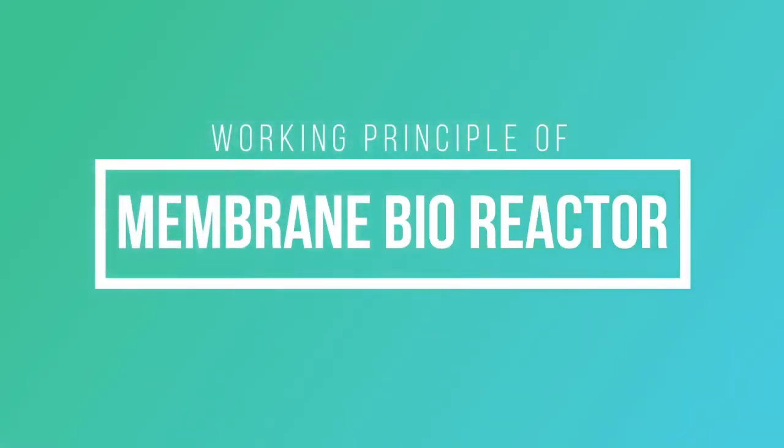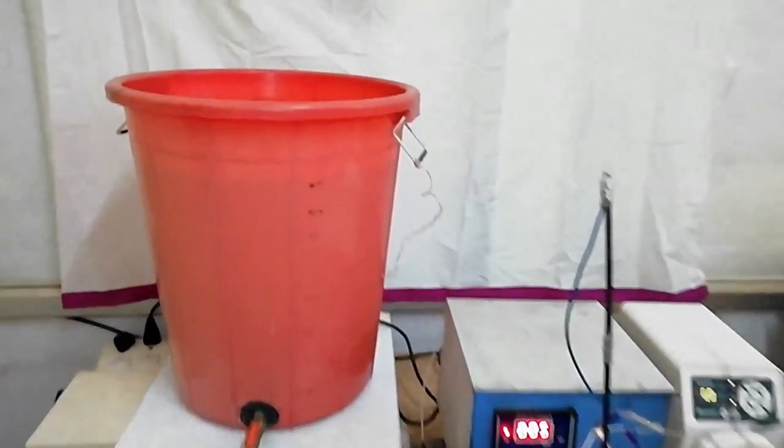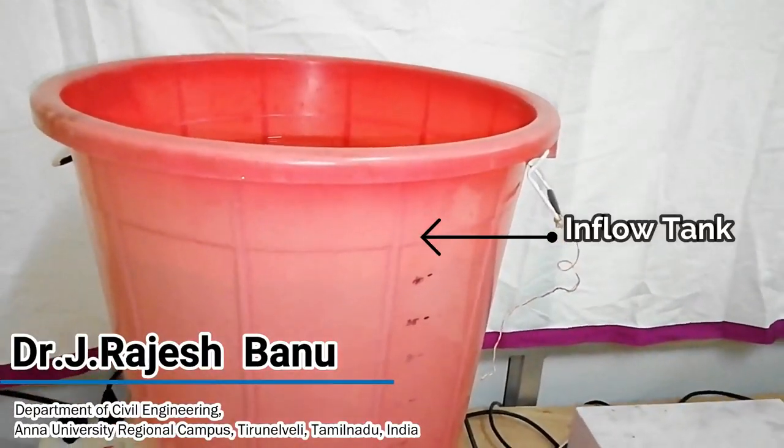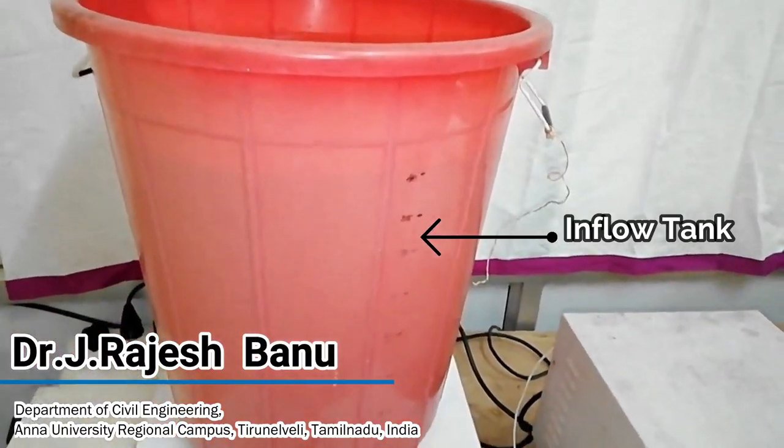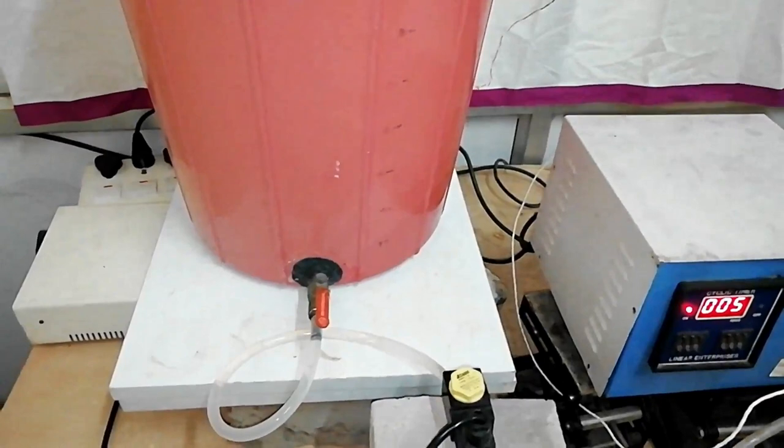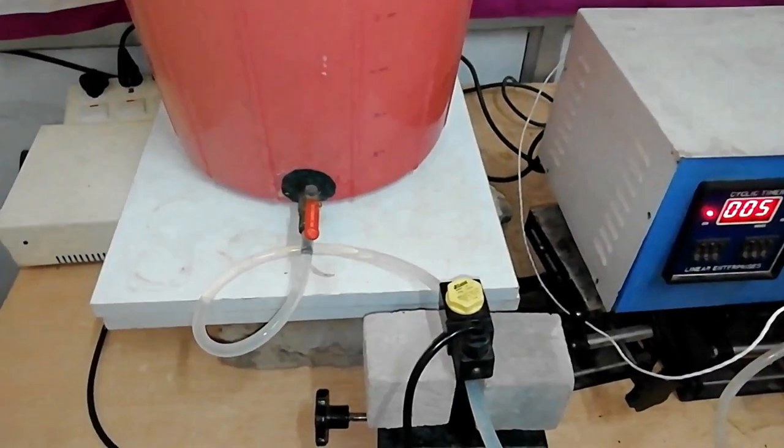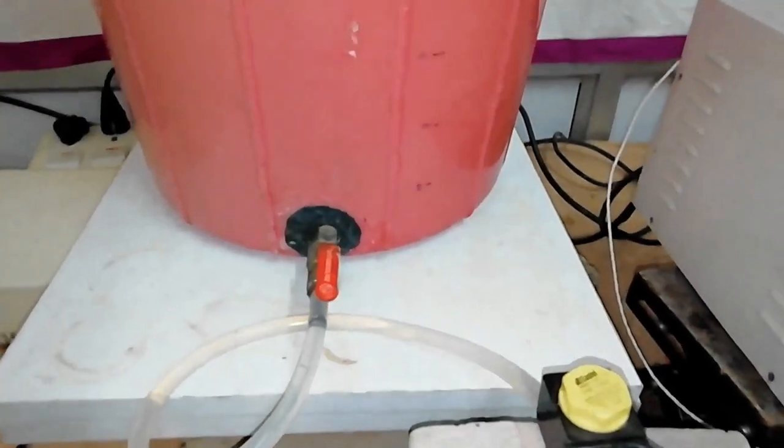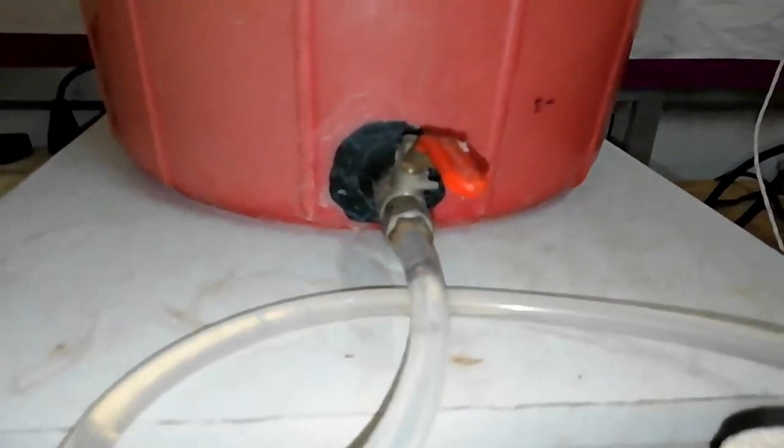In this video, we are going to see about a laboratory-scale MBR used to treat wastewater. This MBR is an aerobic MBR and it is having three important parts. The first one is influent control from the storage tank.